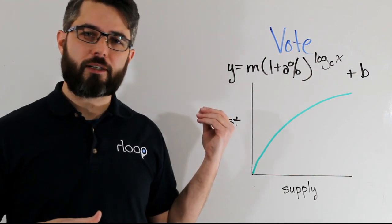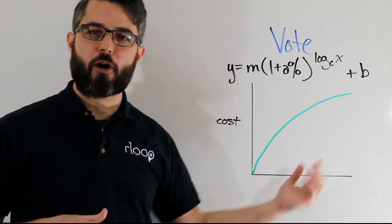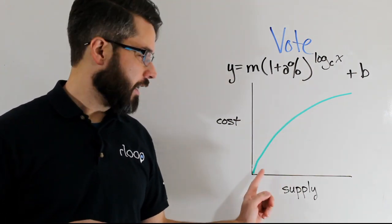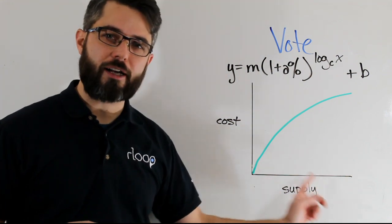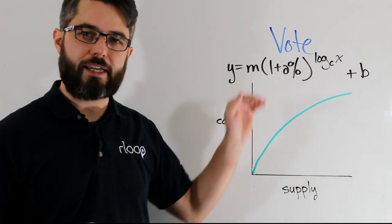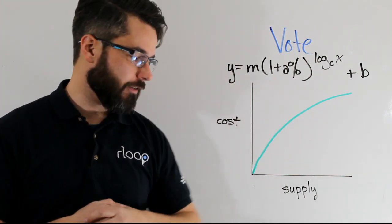Using your rloop token you can buy a project specific token through a smart contract. The cost to buy those project tokens is determined by the current supply of those tokens. So as more tokens are created the cost increases, and that's set by an algorithm that is hard coded to the smart contract.